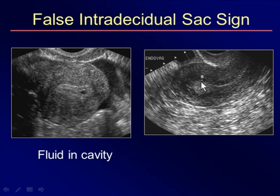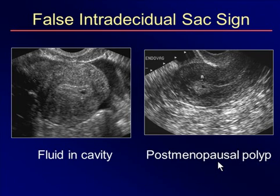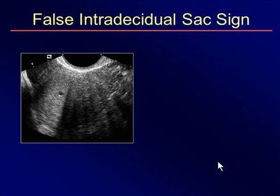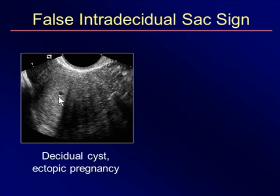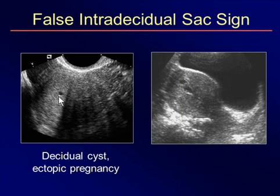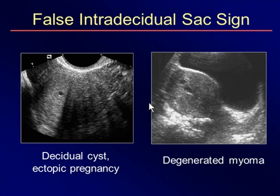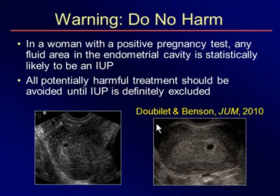Consider this case: something that looked like a little gestational sac buried under the endometrial line — but this lady is 65 years old, postmenopausal, and this was a postmenopausal polyp. This is why it's very important to know the patient's age, gravidity, parity, and previous surgeries. Another case showed a thickened endometrium with a little cystic area — possibly an early IUP, but it turned out to be a decidual cyst, and an ectopic was found in the adnexa. In another case we thought there might be two gestational sacs. Eventually one grew as a pregnancy, while the other stayed the same — it was cystic degeneration of a myoma. So there are many mimickers of this early sign, but it can still be useful.